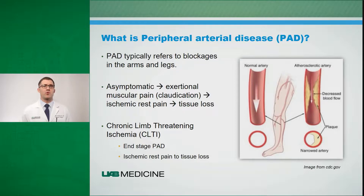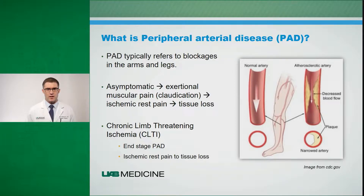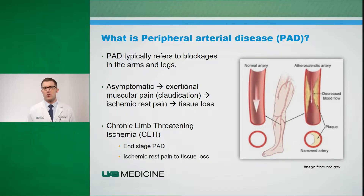Chronic limb-threatening ischemia is really the end stage of peripheral arterial disease, and that refers specifically to those patients with ischemic rest pain or tissue loss.